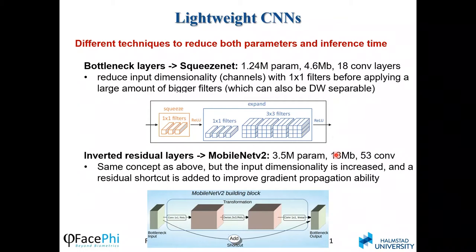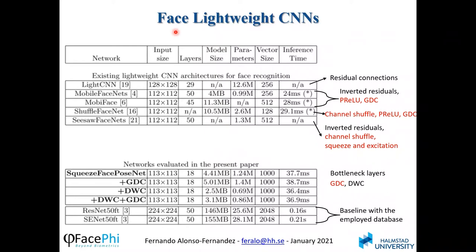There are specific CNNs presented for face recognition, most of them based on the architectures mentioned or similar ones. For example, LightCNN is based on residual connections. MobileFaceNets and MobileFace are based on MobileNet v2, and they incorporate techniques such as PReLU instead of ReLU and global depthwise convolution. ShuffleFaceNet is based on ShuffleNet, another generic architecture.